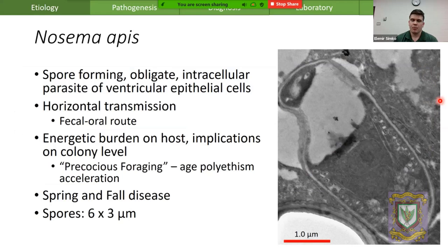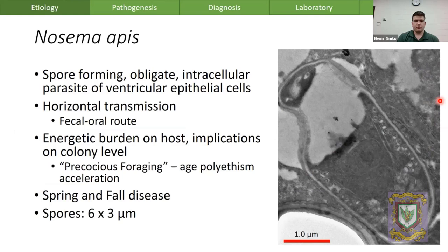This is an EM photo of a Nosema apis environmental spore. These spores are quite tenacious and can last in the environment. They require infection of a honeybee to reproduce and need to enter the ventricular epithelial cells — the ventriculus being the mid-gut section. They undergo fecal-oral transmission and cause disease by imposing an energetic burden on the host.